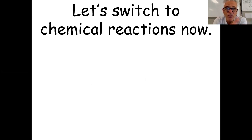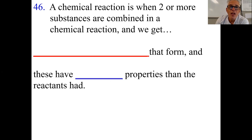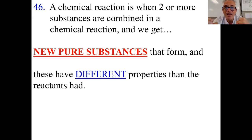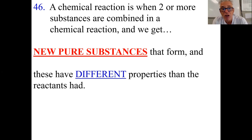Now we're going to look at chemical reactions — that was all physical. How do you look at something in chem lab and say: was that a chemical reaction or a physical change? A chemical reaction is when two or more substances combine and we get new pure substances that form with different properties than the reactants. Things bond together into something new, or you can take something and unbond it back into its components. The products will always have different properties and different formulas than the reactants, though you'll have the same mass because of the law of conservation of mass.